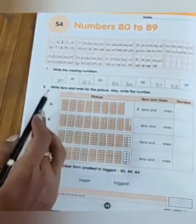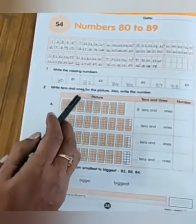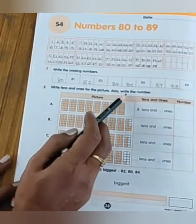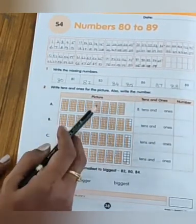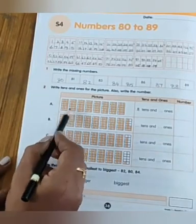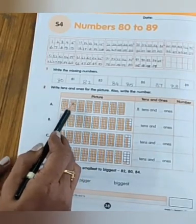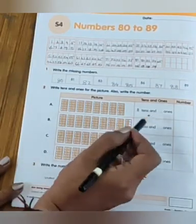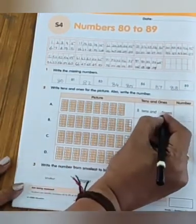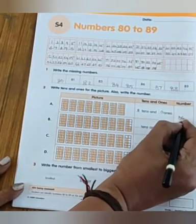Now bit 2. Write tens and ones for the picture also, write the numbers. Bit A. 10, 20, 30, 40, 50, 60, 70, 80. 8 tens and zero ones. And we have to write number 80.